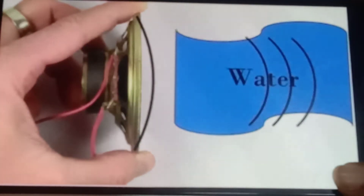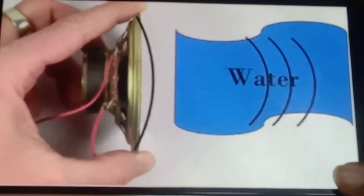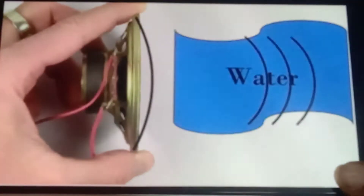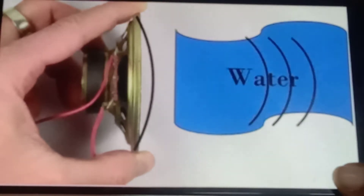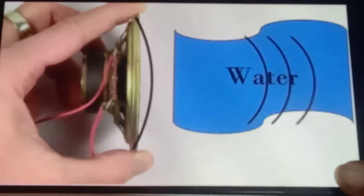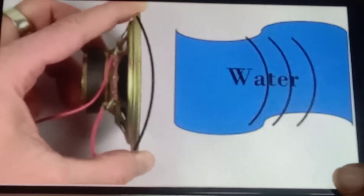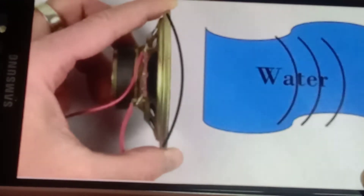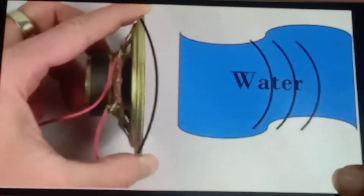Sound is produced when an object is set to vibrate. Vibration means a kind of rapid to-and-fro motion of a particle. This to-and-fro motion of the particle causes the substance around it to vibrate. Thus, sound spreads to the surrounding. The substance through which sound is transmitted is called the medium. Sound moves through a medium from the point of generation to the listener.